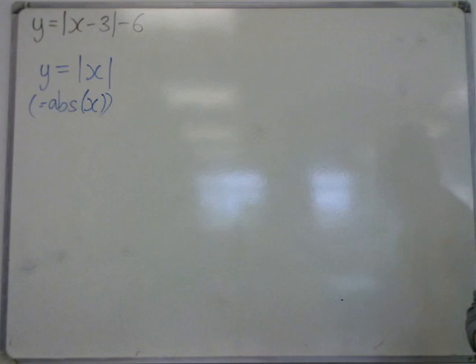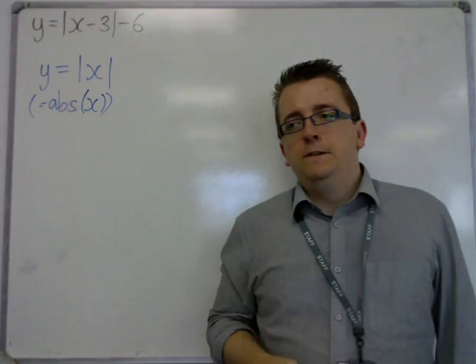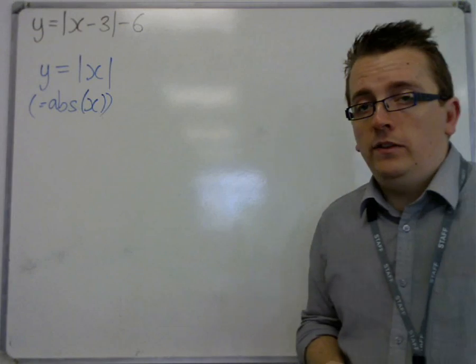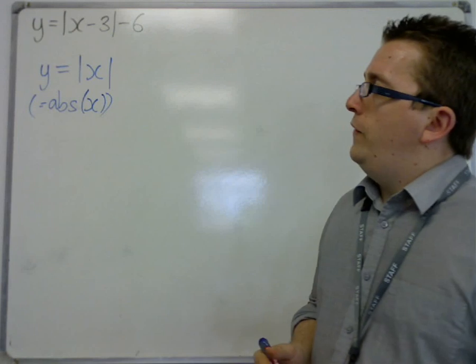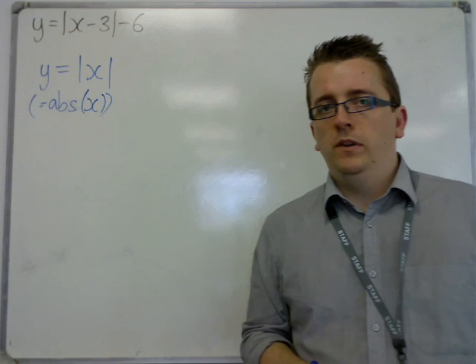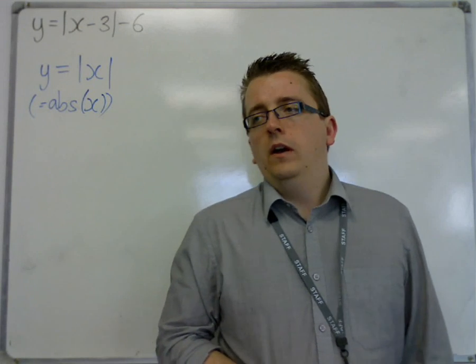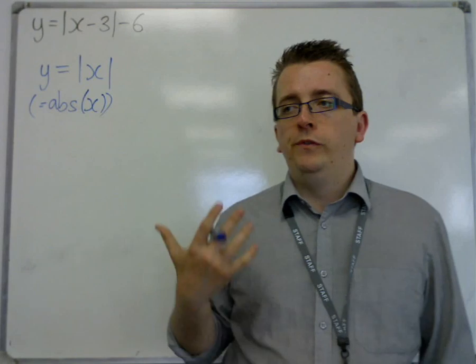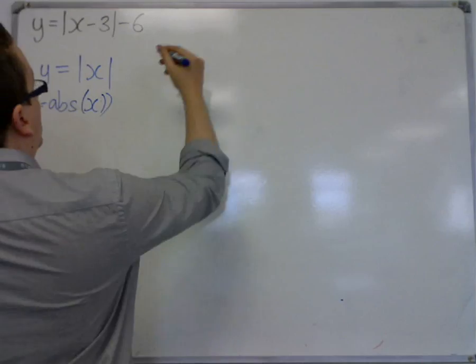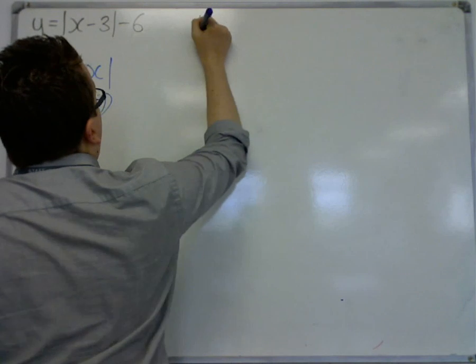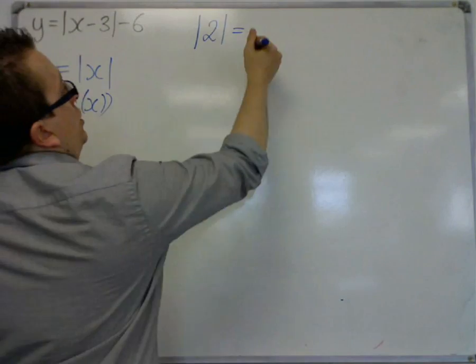This is used in geometry and vectors to represent the length. So, what this does is it effectively gets rid of a negative sign. You can't have a negative length. So the modulus removes that negative from the equation, effectively. So, what this says is that the mod of a number like 2 would just be 2.